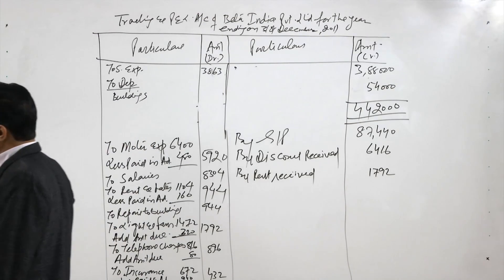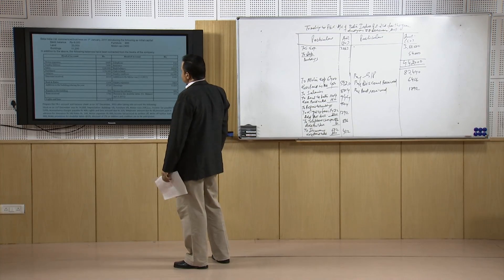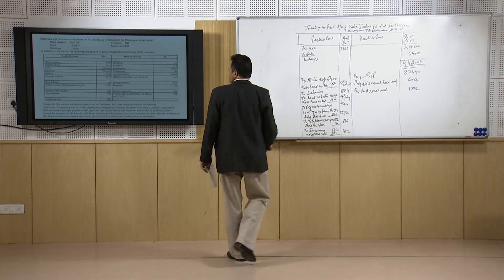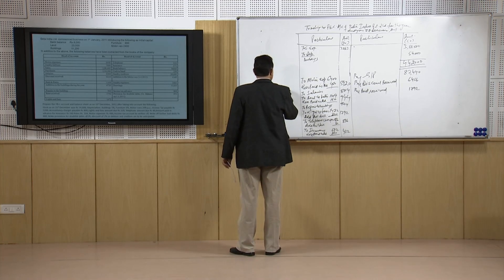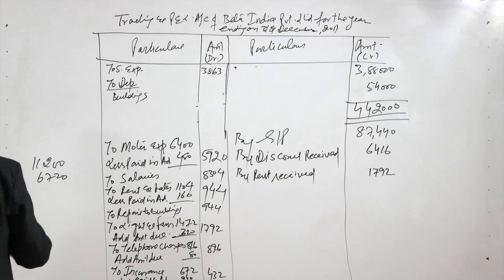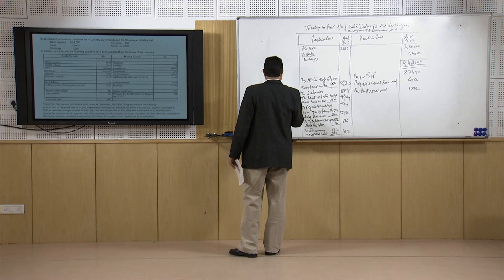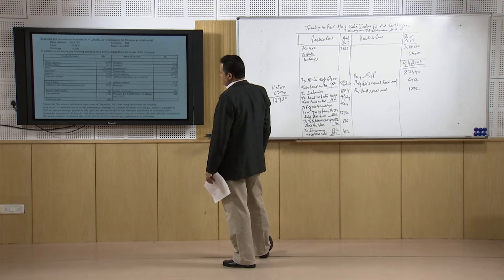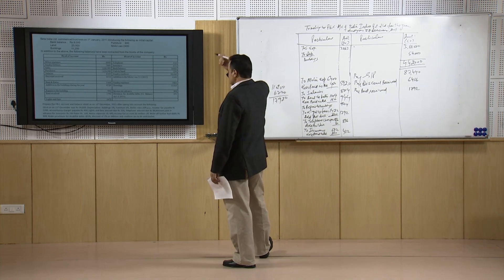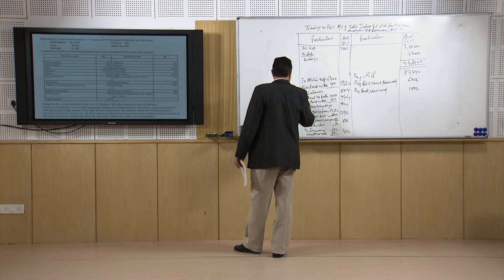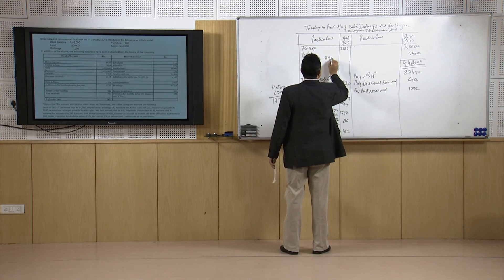Total buildings amount is 11,200 plus 6,720, which works out as 17,920. This is the total building value during the year, and you have to calculate 5 percent of this. This works out as 896 rupees for buildings.